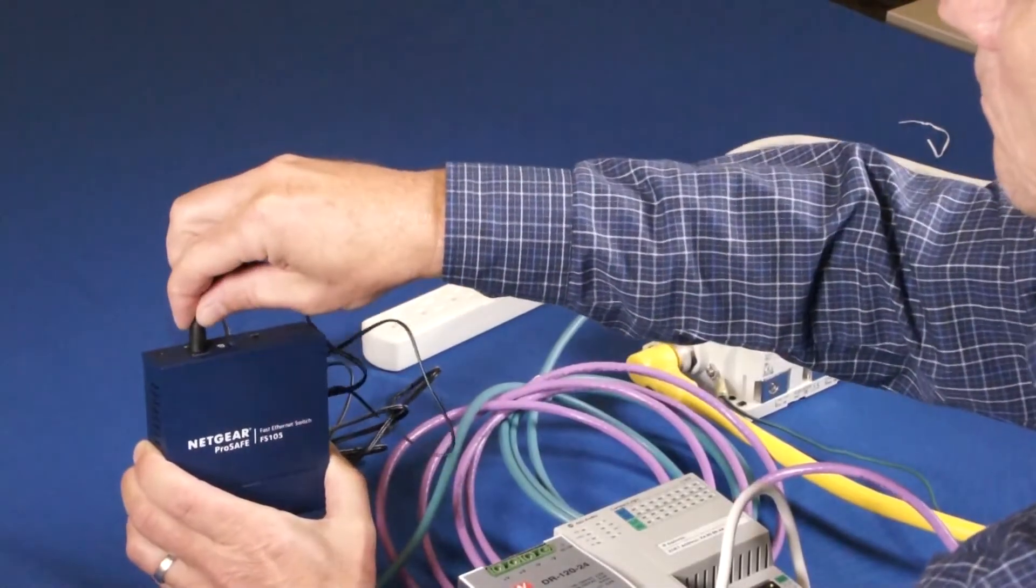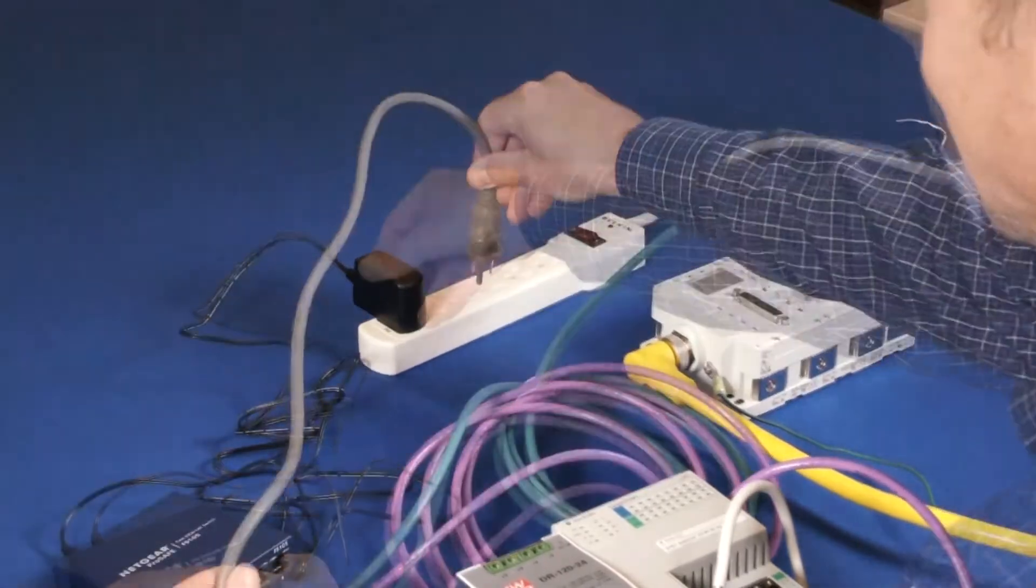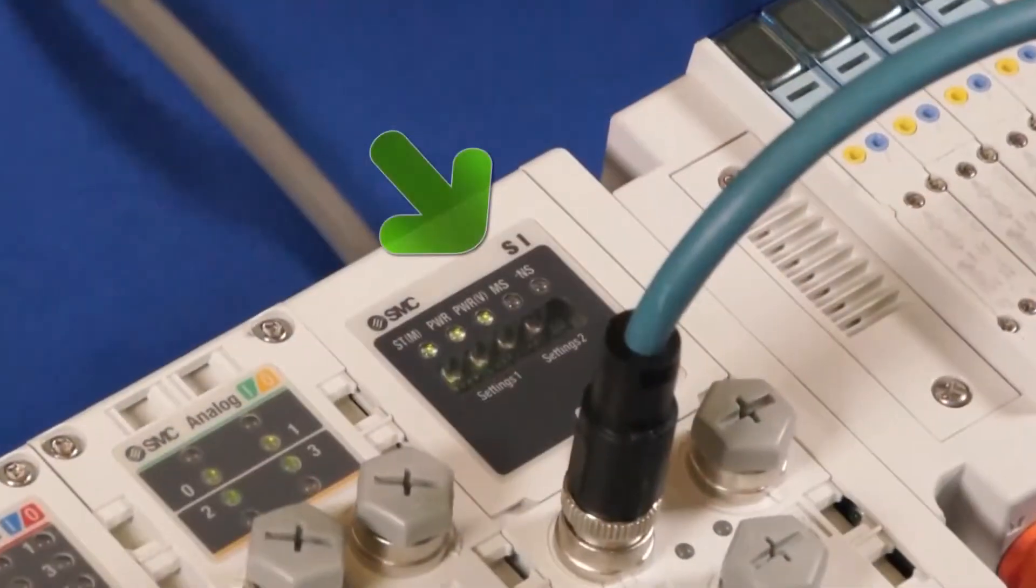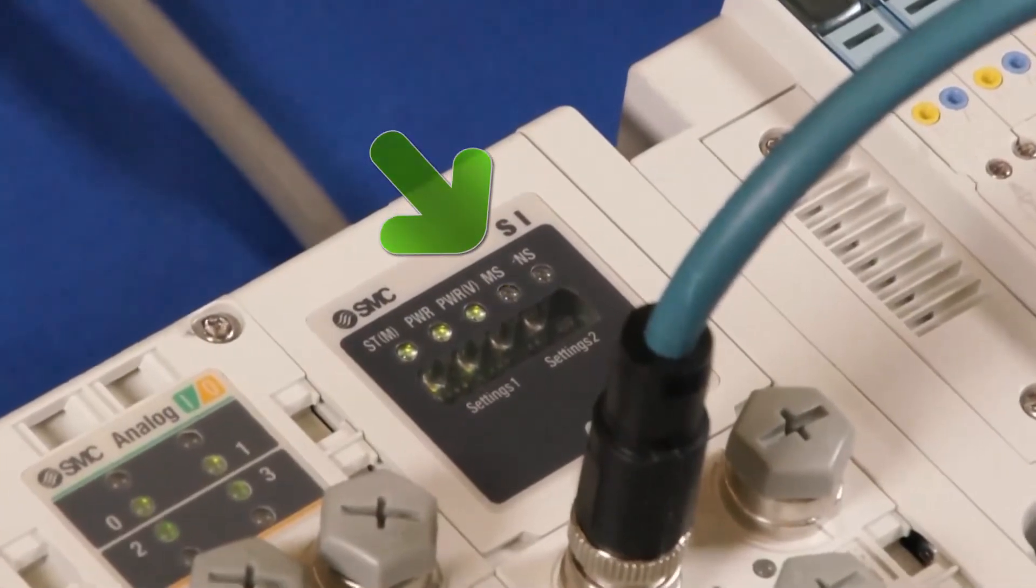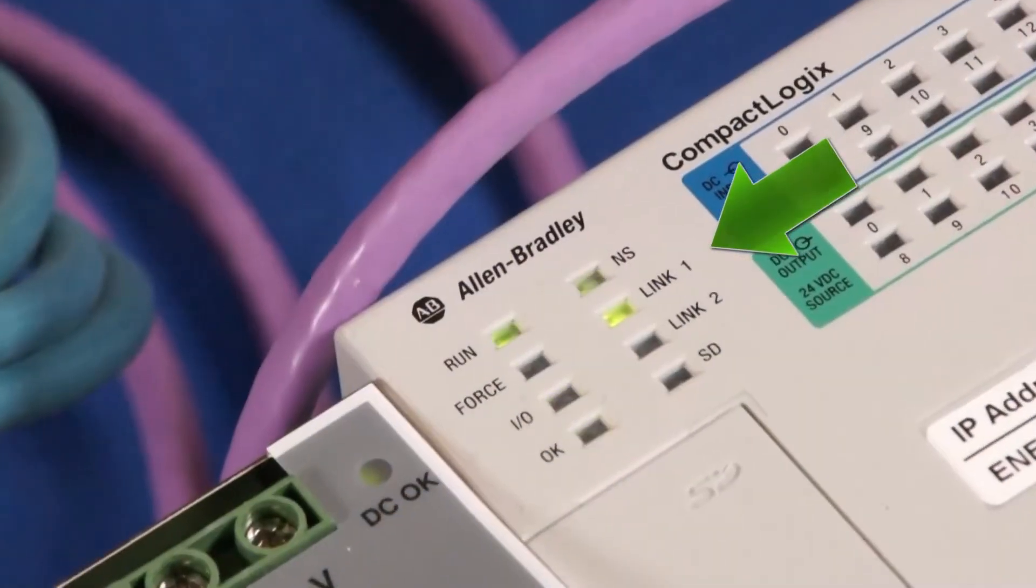Finally, connect everything to 110 volts AC. Turn on the power and look for lights and communication. We have them there, there, there, and there.